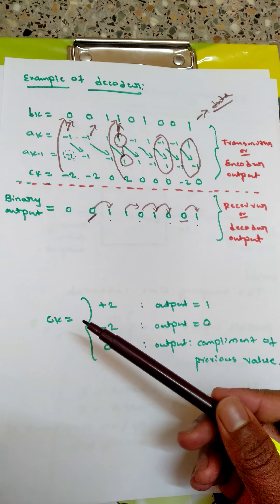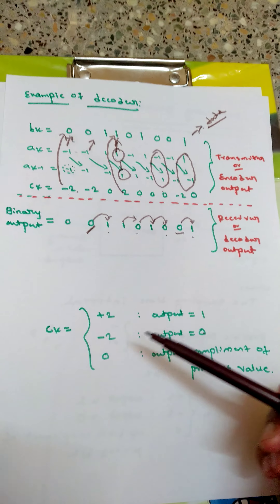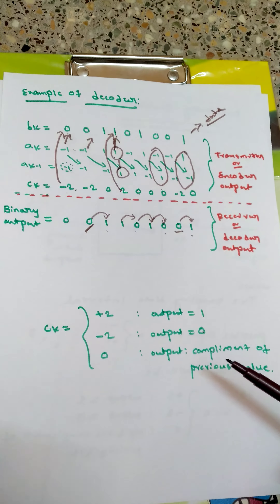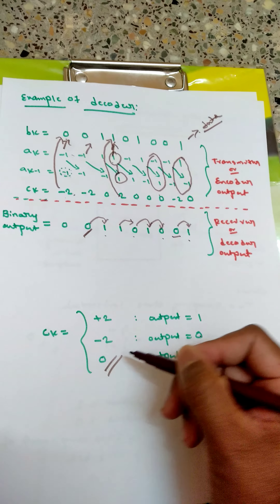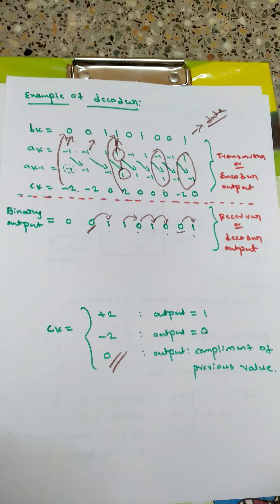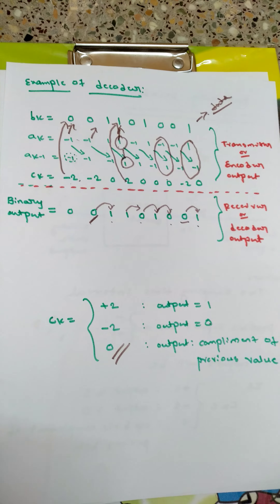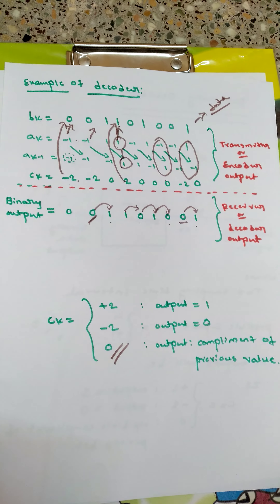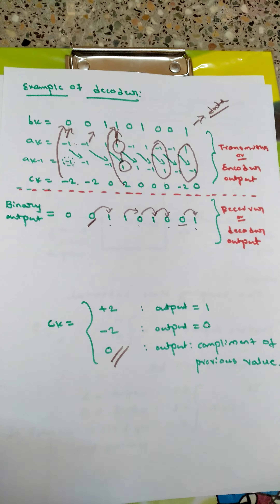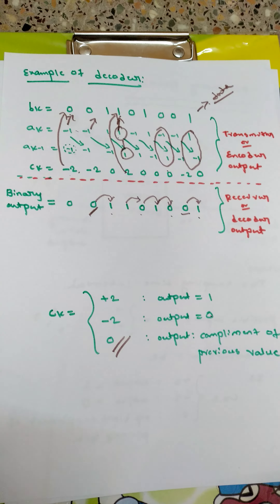I hope you understood the ck decoding algorithm — why plus two gives output one, minus two gives output zero, and zero gives the complement of the previous value. However, by writing it this way, we face two issues: error propagation and polarization error. I will explain those two concepts in further videos. If you liked the video please leave a thumbs up and subscribe to the channel. Thanks for watching.